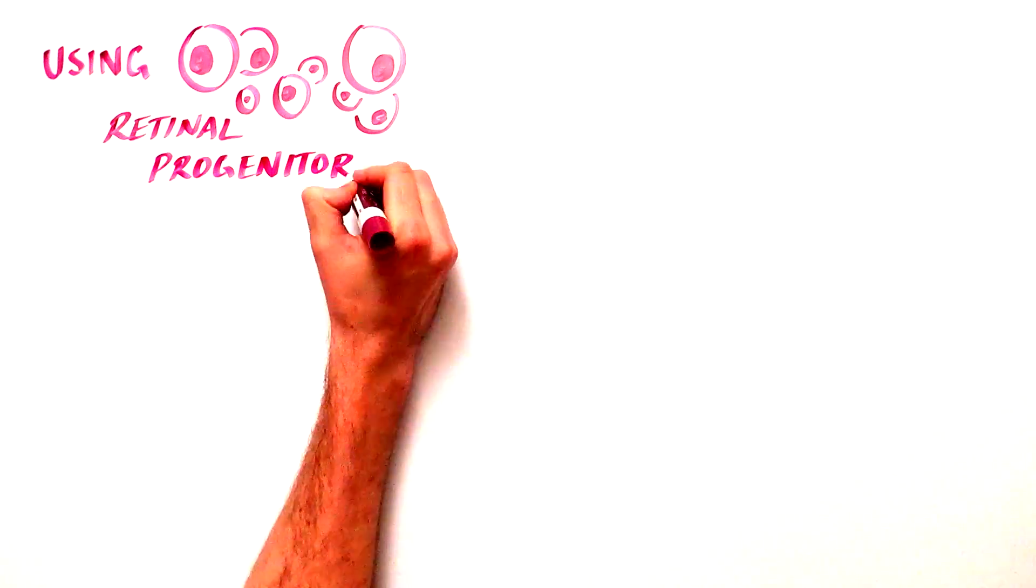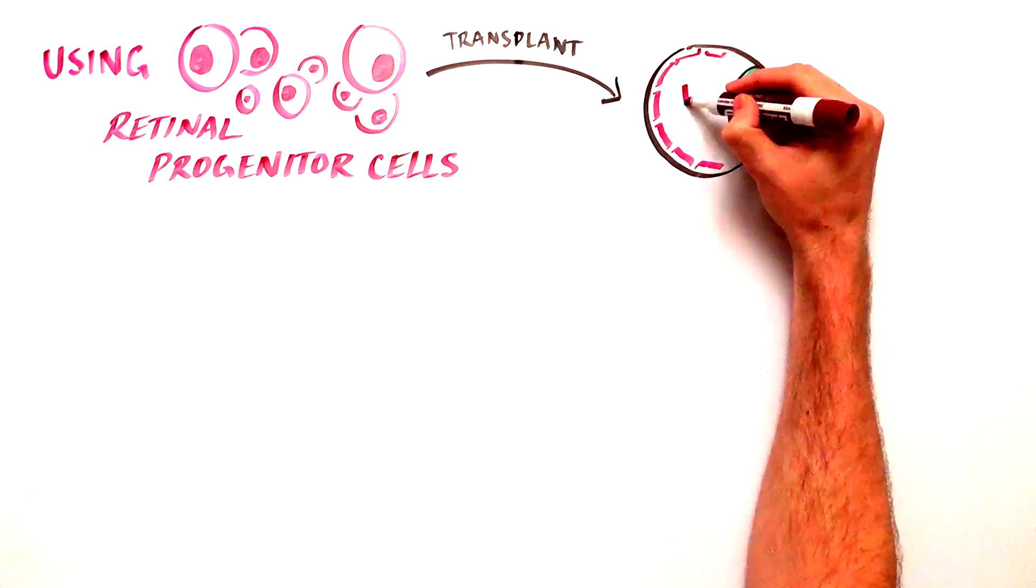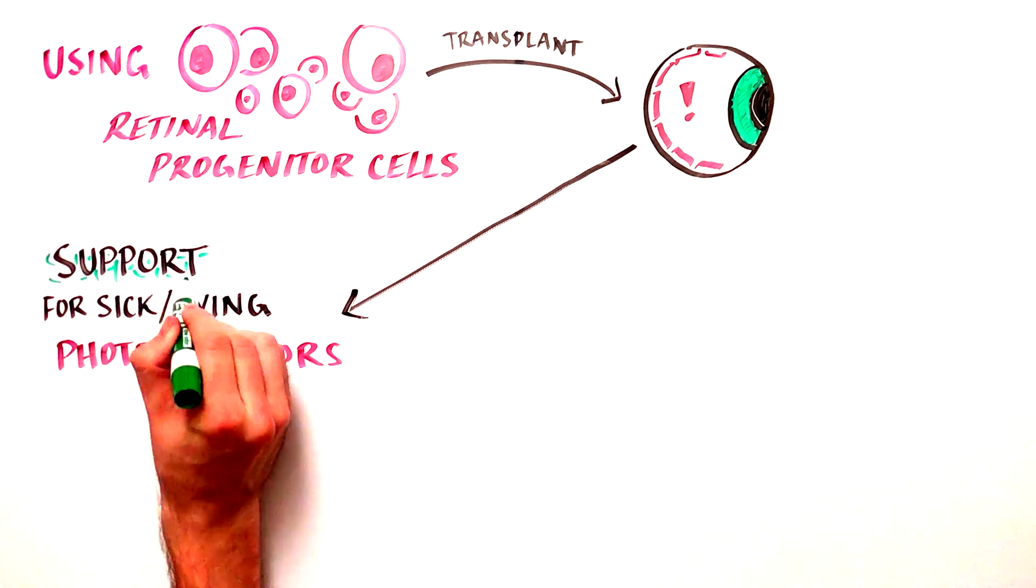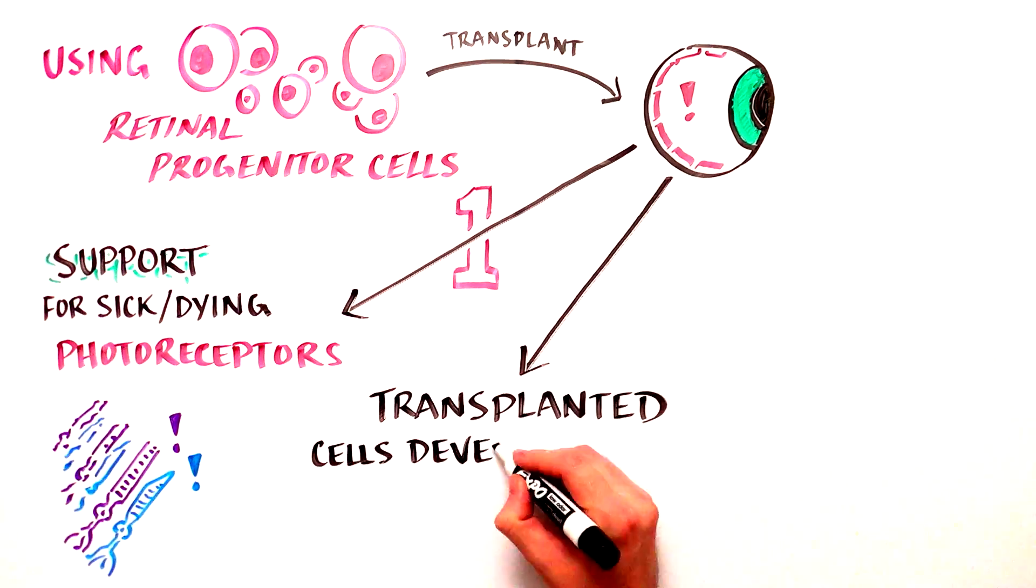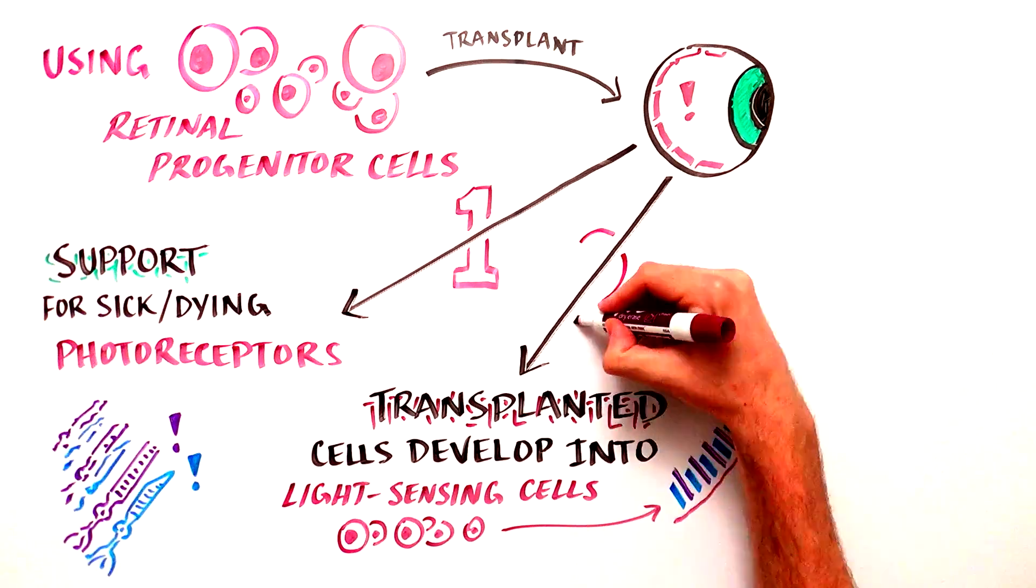They are using specialized stem cells called retinal progenitor cells, which can be transplanted into the eye and do several things. First, they can support the sick and dying photoreceptors to restore their health. Second, these transplanted stem cells can eventually develop into light-sensing cells themselves.